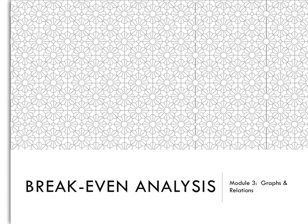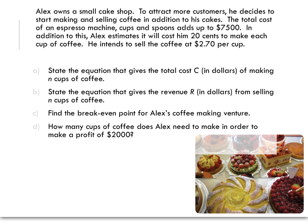This video is just a quick example of break-even analysis style questions for further mathematics linear modeling. In this question here, Alex owns a small cake shop. To attract more customers, he decides to start making and selling coffee in addition to his cakes. The total cost of an espresso machine, cups and spoons adds up to $7,500. In addition to this, Alex estimates it will cost him 20 cents to make each cup of coffee. He intends to sell the coffee at $2.70 per cup.